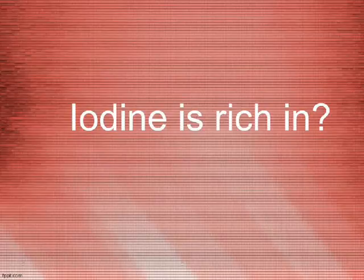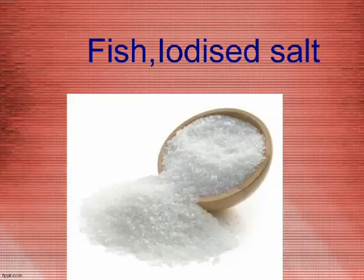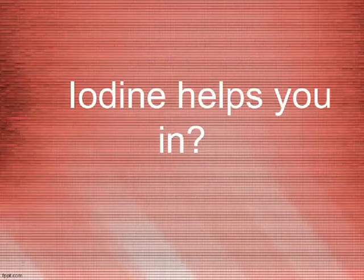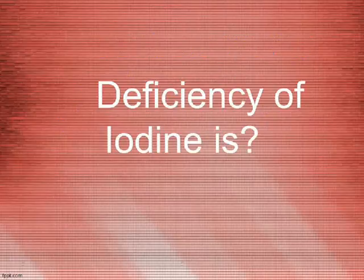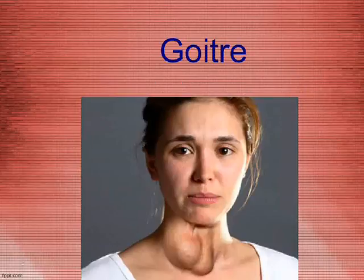Iodine is rich in fish and iodized salt. Iodine helps you by controlling growth and speeding up chemical reactions. The deficiency disease caused by lack of iodine is goiter.